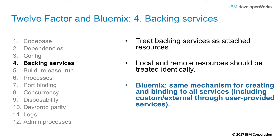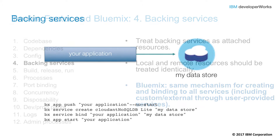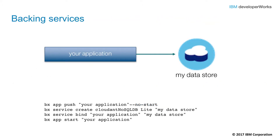Factor number four: backing services. This is about treating backing services as attached resources. They may be running on the same machine, on different machines, or in third-party servers or some other cloud. You need to effectively treat these as attached resources that are easily and cleanly bound. For your application, push the application that needs an external data store, create the data store, bind the data store, and start the application. If you're wondering about how to load any initial data into the data store, we'll get to that in a later factor.